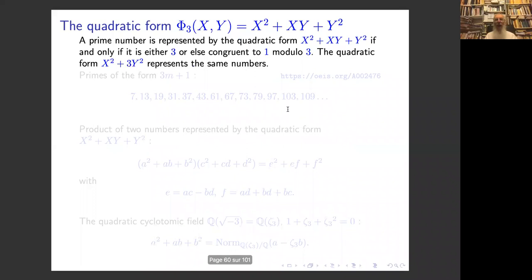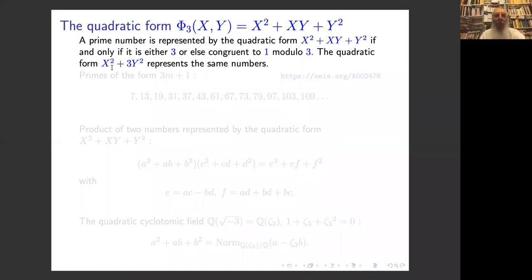The next term with β comes from numbers which are represented by both Φ_4 and Φ_3 — since we counted them twice, we have to subtract those. The error term takes into account all the binary cyclotomic forms of degree at least 4. We already saw what Φ_4 is — it is the sum of two squares. The story is very similar for the form x² + xy + y²: the prime numbers represented by it are either 3 or those congruent to 1 modulo 3.